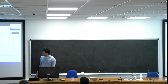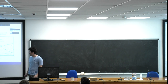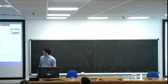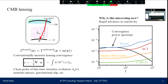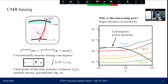CMB photons are lensed by the intervening matter as they traverse the observable universe, and we can use measurements of this lensing to learn about the late-time structure evolution. In the weak lensing limit, this lensing is completely determined by the deflection field alpha. Working in the flat sky approximation, X is some 2D coordinate, and conventionally what we measure is not alpha but its divergence, which we call the lensing convergence. This is a particularly exciting time for CMB lensing because we're in a phase of rapid advances in sensitivity.